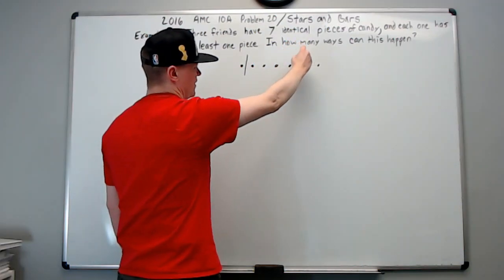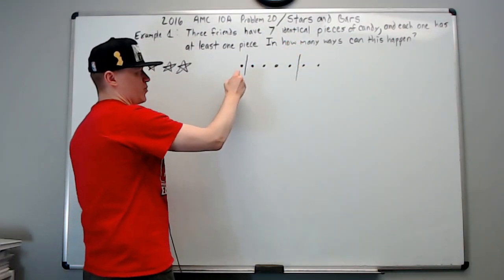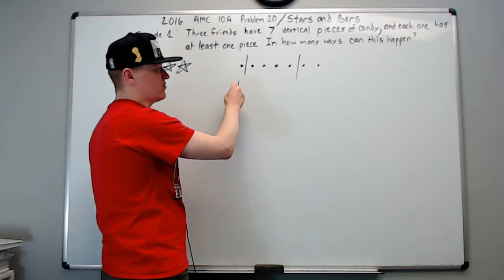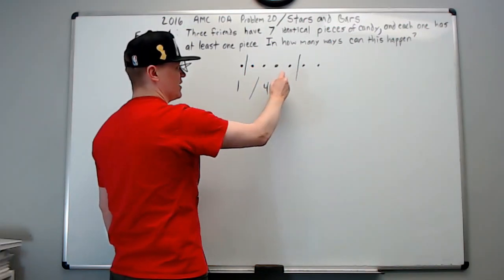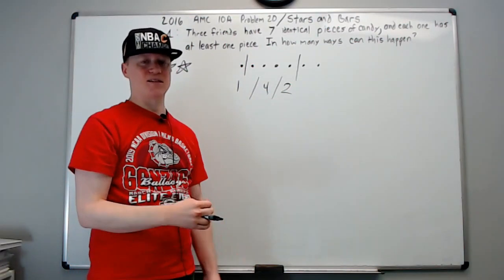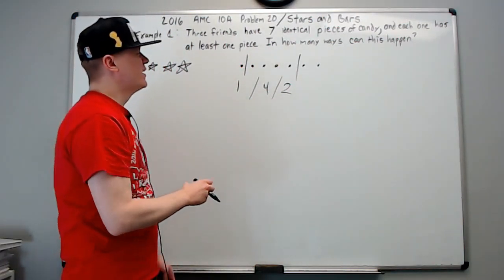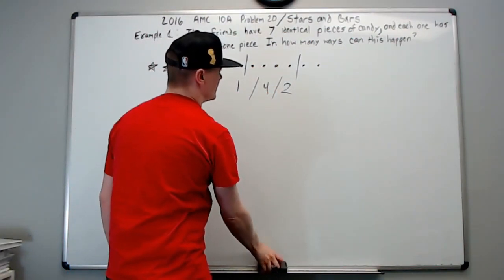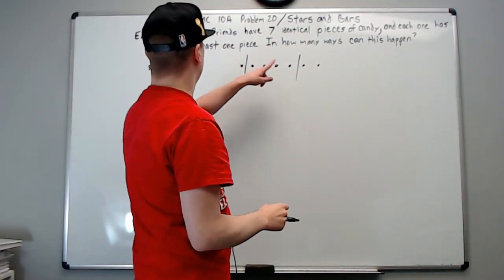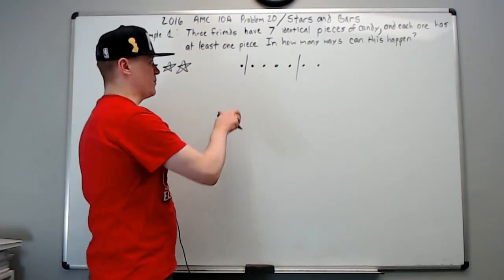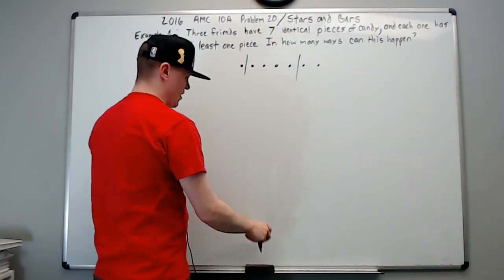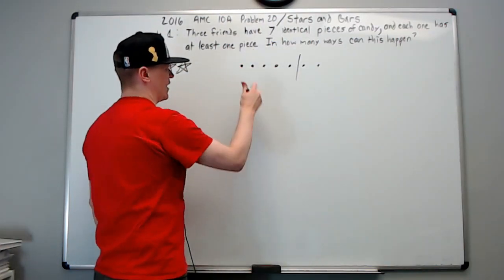This represents the first person on the left getting one piece of candy, the next person getting four, and the next getting two — a total of seven pieces distributed. We need to figure out where these dividers go. For three people, you need two dividers because you create three groups. Where can the dividers go?